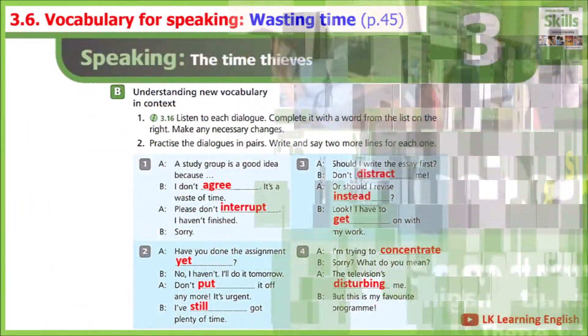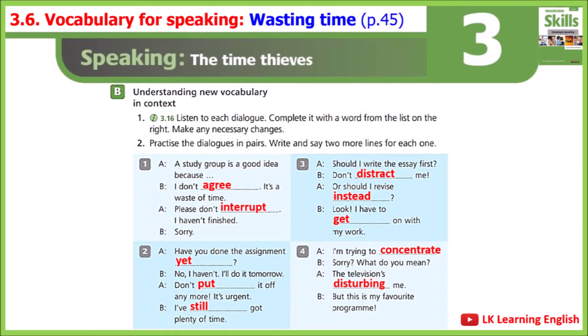3.16, Lesson 3.6: Vocabulary for speaking - wasting time. Exercise B1: Listen to each dialogue and complete it with a word from the list on the right, making any necessary changes. Dialogue one: 'A study group is a good idea.' 'Because I don't agree - it's a waste of time.' 'Please don't interrupt, I haven't finished.' 'Sorry.'